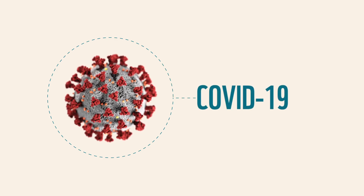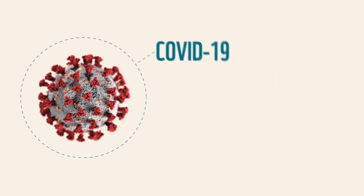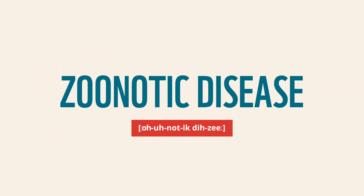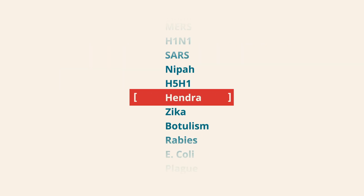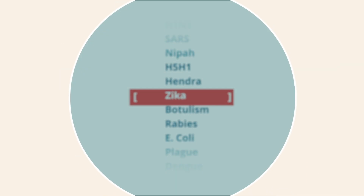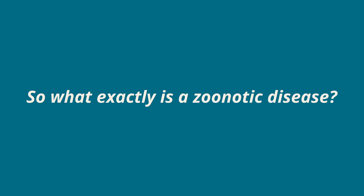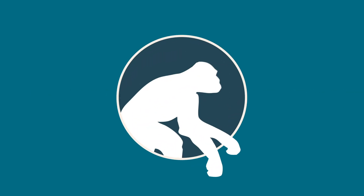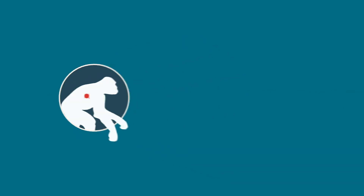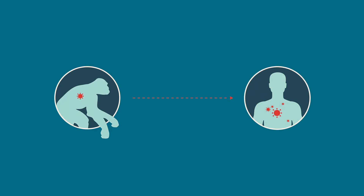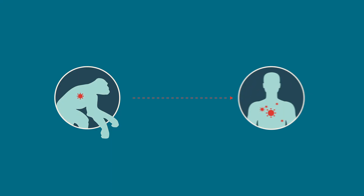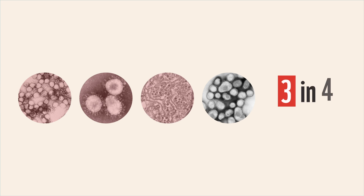With the global spread of COVID-19, you've likely heard the term zoonotic disease by now. But did you know that they're actually responsible for the majority of new infectious diseases? Zoonotic diseases, or zoonoses, are infectious diseases that originate in animals and are transmitted to humans causing illness. It is estimated that three out of four new infectious diseases come from animals.